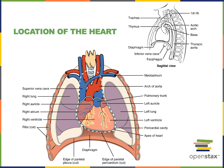The heart is attached to the great blood vessels — the superior vena cava, the arch of the aorta, and pulmonary trunk — which are large blood vessels attached at the base of the heart. So the superior region of the heart is called the base of the heart, and the pointed inferior region is the apex of the heart. The apex is found on the left side.